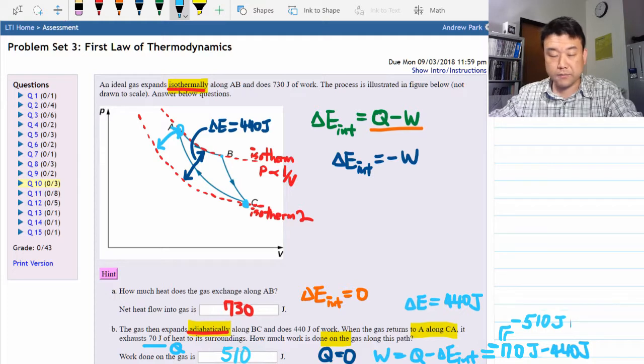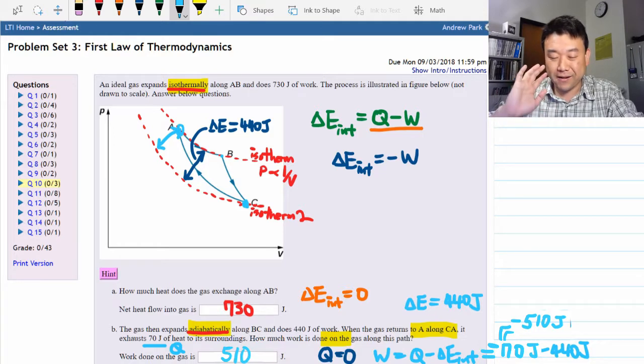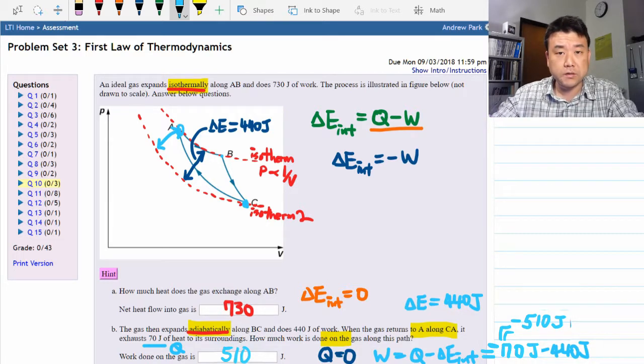All right, that was fairly easy. We didn't have to do any difficult integrals. As long as we are paying attention to what isothermal and adiabatic means and recognize that we are given enough information, especially using the first law.